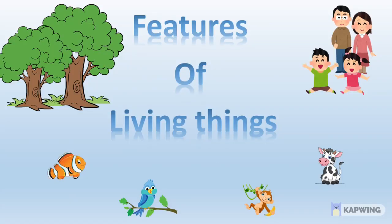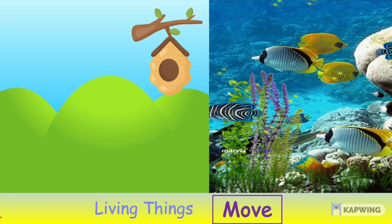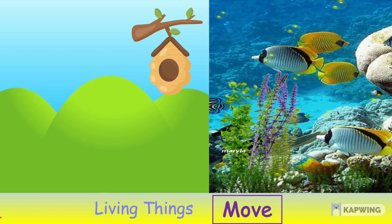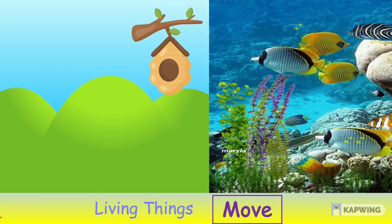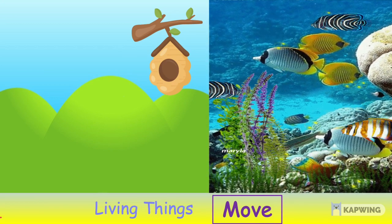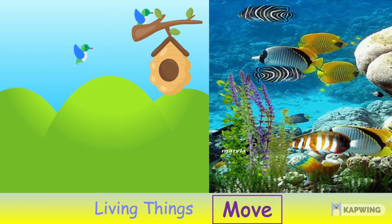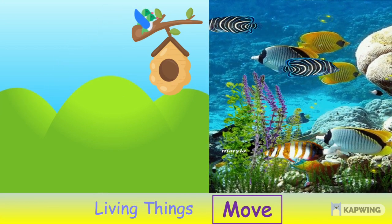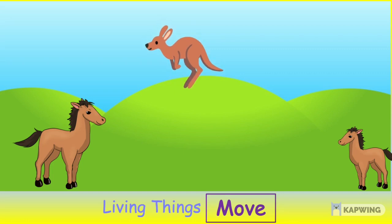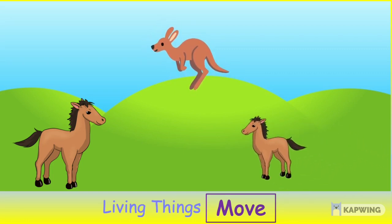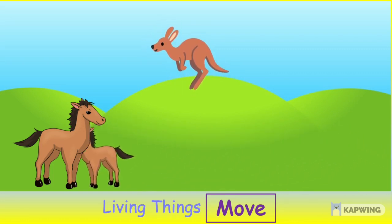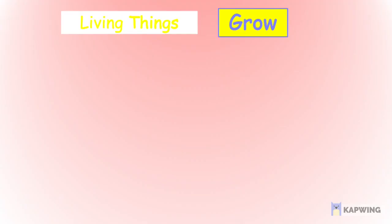What are the features of living things? Living things move. For example, birds fly, fish swims, kangaroos jump and horses run.